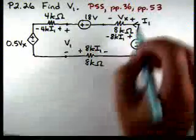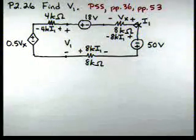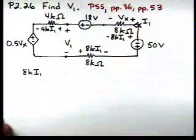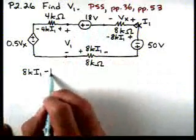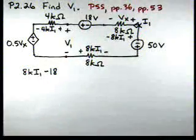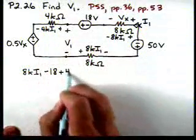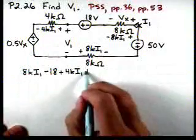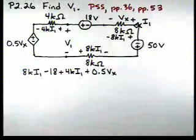Let's start at that corner as shown with the X, move around counterclockwise. So if we start, we'll have a voltage drop of 8Ki1. Here we have a voltage rise, we're going from the minus to the plus, so that's minus 18. Here we have a voltage drop that's 4Ki1 and a voltage drop of 0.5VX. We're not going to worry about VX yet, we'll take care of it in a moment.